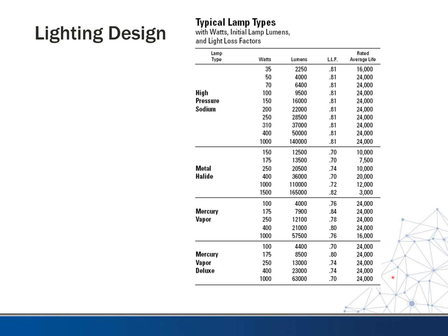This graph from years ago shows some common light loss factors once you multiply those things together. High pressure sodium lights are at about 0.80 light loss factor. Metal halide is anywhere from 0.70 to 0.80, depending on the wattage of the bulb. Mercury vapor type lights vary similarly.